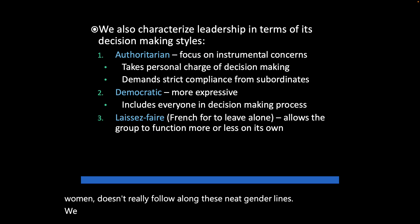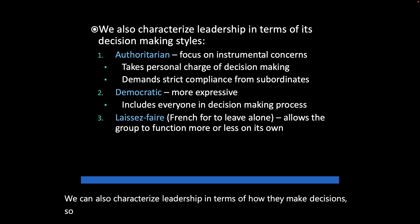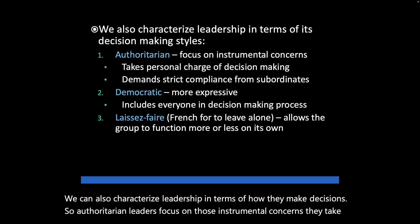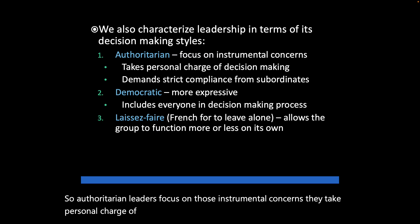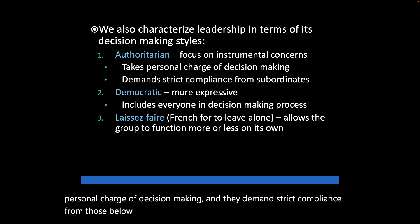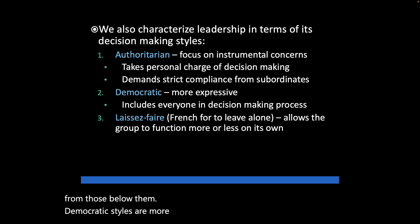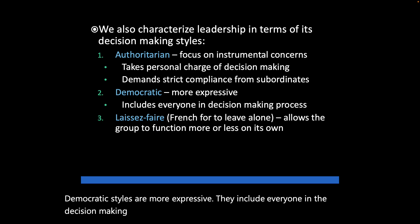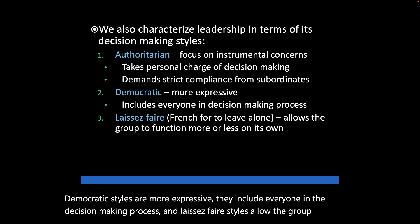We can also characterize leadership by how decisions are made. Authoritarian leaders focus on instrumental concerns, take personal charge of decision-making, and demand strict compliance from those below them. Democratic styles are more expressive and include everyone in the decision-making process. Laissez-faire styles allow the group to function more or less on its own.